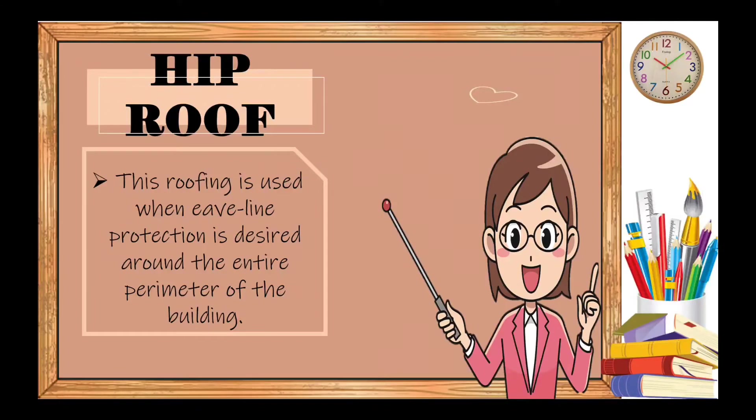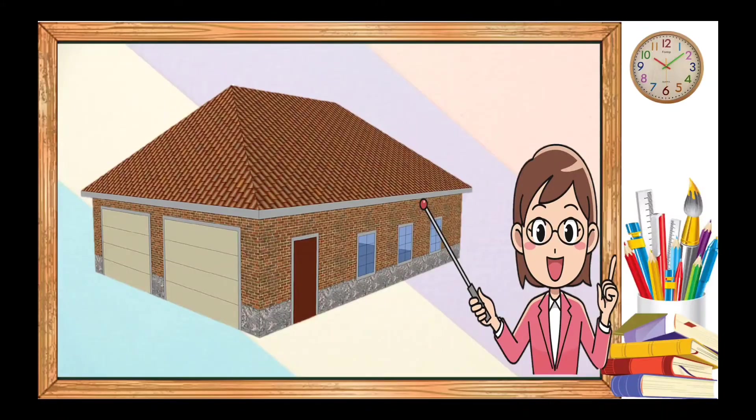Next, we have hip roof. This roofing is used when eave-line protection is desired around the entire perimeter of the building. It is slightly more difficult to build and usually have four sides. It's a popular choice but does not provide for ventilation. They do perform better in high wind areas.